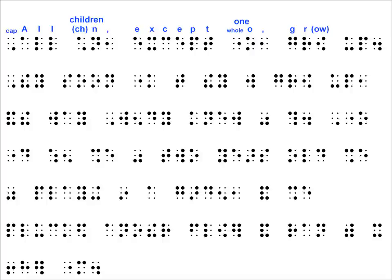Next is a cell that looks like the A but also has dots three and six raised. The A column gives A, K, U, CH, and EA — so this is the letter U. Next is something that looks like the F cell but with dot three raised. The F column gives F, P, AND, ED, and 2 — so this is the P cell. Finally, a cell that looks like someone pointing straight down, as if to say the sentence ends right here. So this cell must be the period.